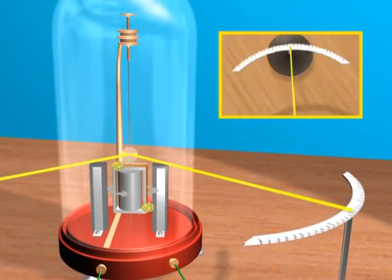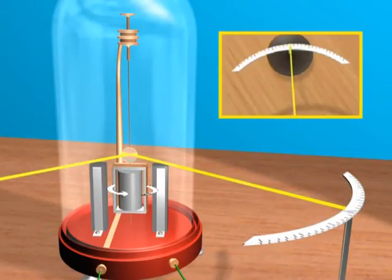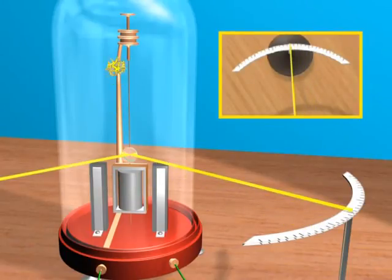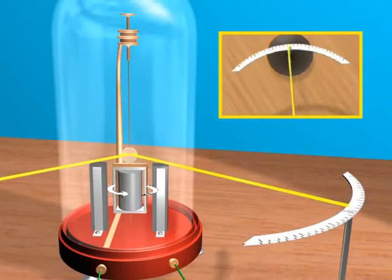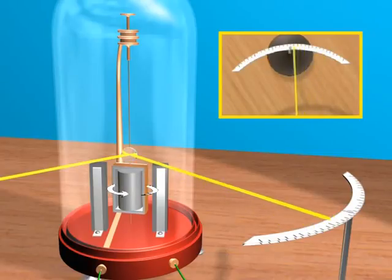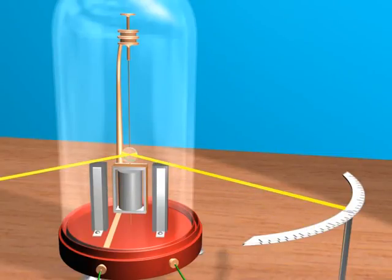Eddy currents are produced due to the motion of the coil inside the magnetic field produced by the magnet of the galvanometer. Due to Lenz's law, the direction of eddy currents is such that it opposes the oscillations of the coil.